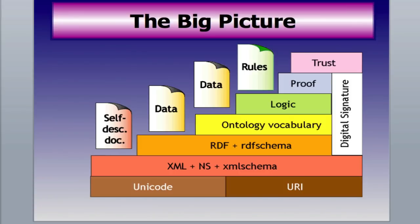Here's the big picture showing the different layers of the semantic web. Some of these you know already, and some we'll cover in this presentation. On the very bottom is Unicode and Uniform Resource Identifiers — like a nameplate for everything that's going to be on the web. Unicode is a common code language.